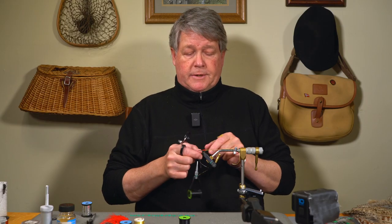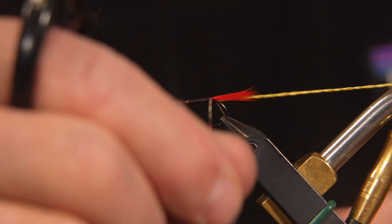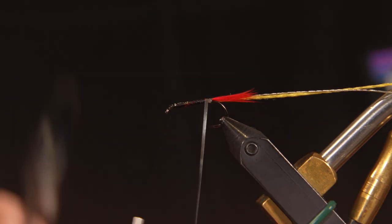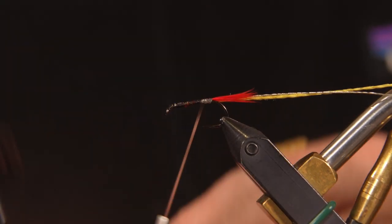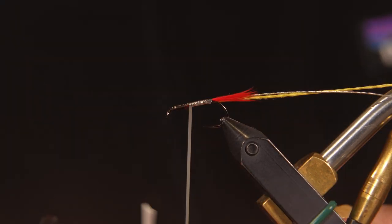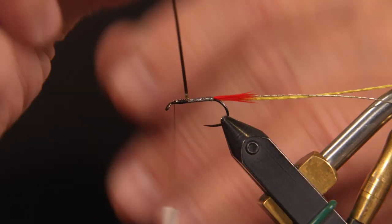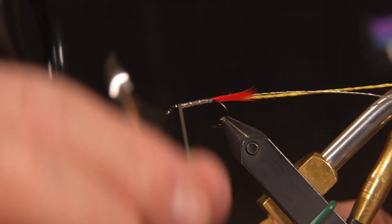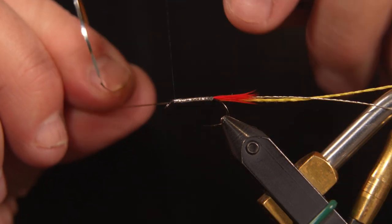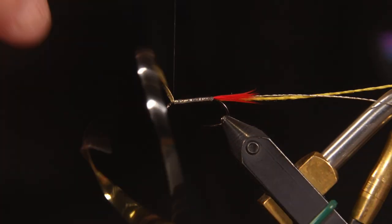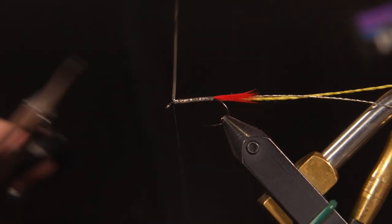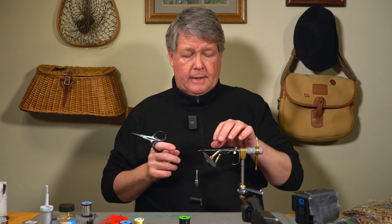So the first thing I'm going to do is tie or wrap in my mylar tinsel as the underbody. Again, that just makes the silk floss, when it gets wet, have some refraction to it, as opposed to the black thread that I'm using. We'll kind of bury that color. The black will bleed through. A couple of wraps in front, a couple of wraps in back and I lock that in.